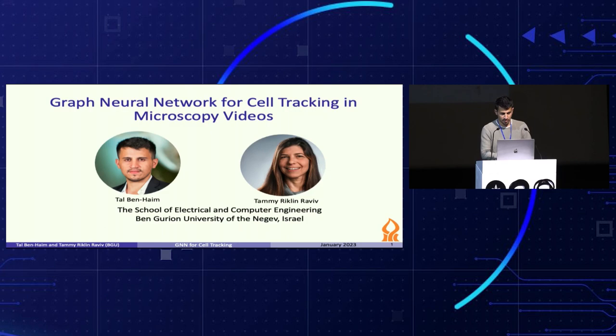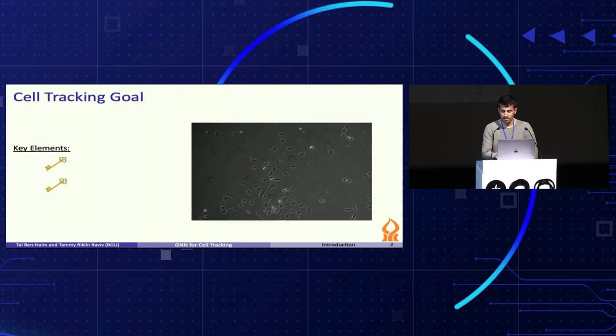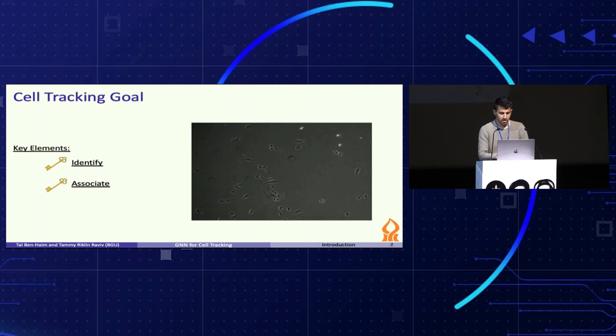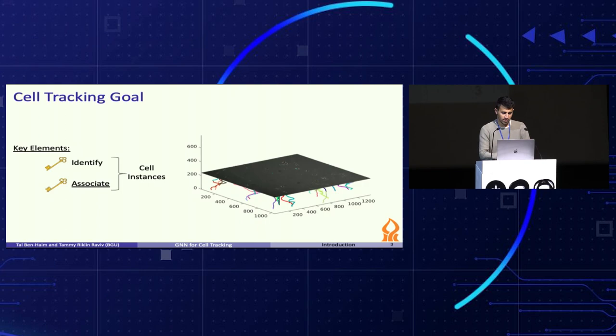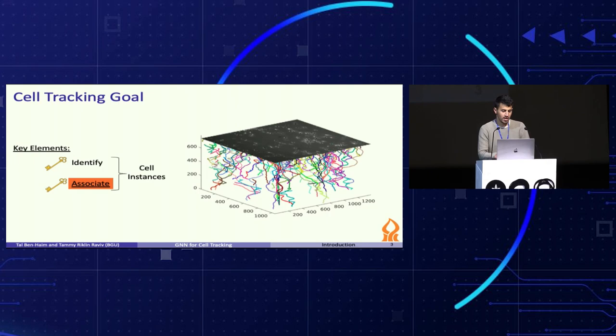Cell tracking in microscopy video is a common tool for the study of biological systems and processes. Given a microscopy sequence, tracking of individual cells mainly relies on two key elements: identification of the cell in the sequence of frames and association between cells in consecutive frames. In this work, we focus on the association part, where the main goal is extraction of the full cell path and cell lineage for the entire sequence.